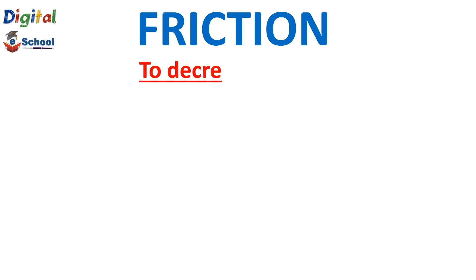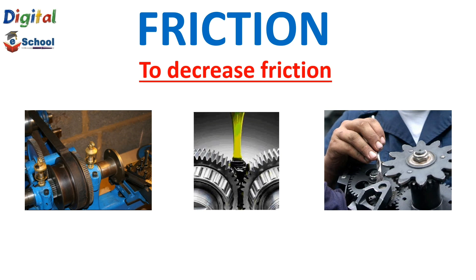Now let's see how we can decrease friction. Let's take the example of machines. The moving parts of a machine, when they rub against each other, produce heat. This heat decreases the efficiency of the machine and eventually the parts get damaged. So how can we avoid that? We can avoid it by reducing friction.